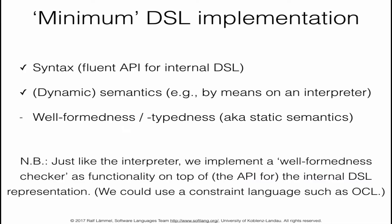At this point we have essentially implemented the syntax of the finite state machine language via a fluent API. We have also implemented the dynamic semantics by means of an interpreter. What we are still missing for a minimum complete DSL implementation is what you might call well-formedness, well-typeness, or static semantics — additional constraints we want to impose on DSL programs for them to be sensible and executable in a reasonable way.